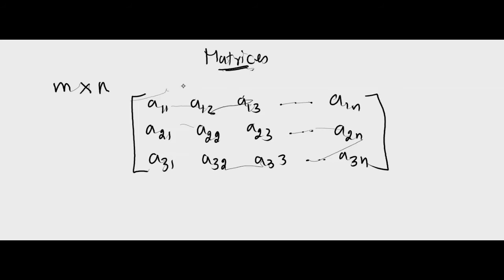In general, we denote the matrix by [Aij] M cross N. The general element is denoted by Aij, and the matrix is written as [Aij] or [Aij] M cross N.